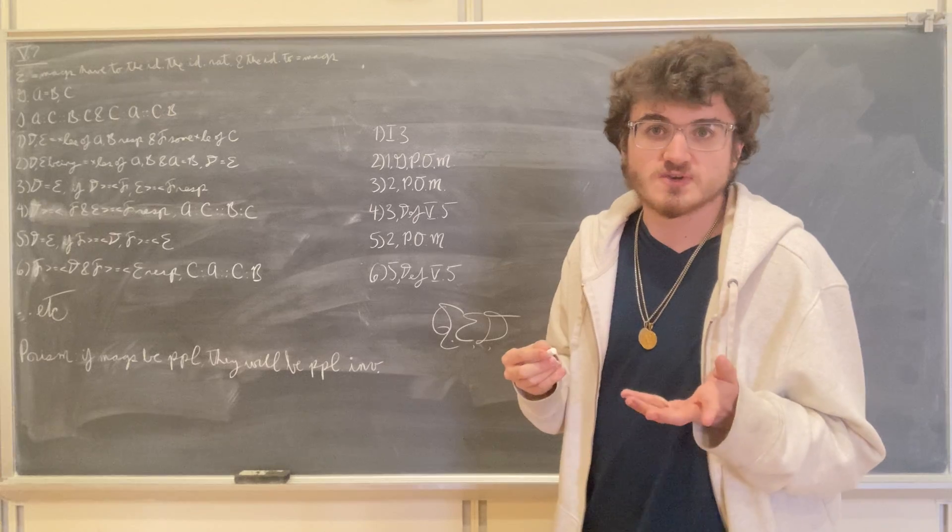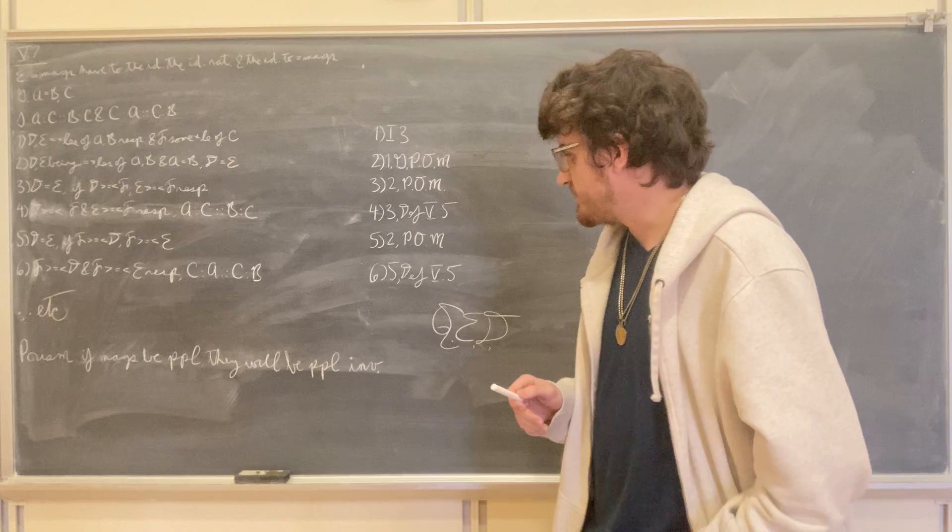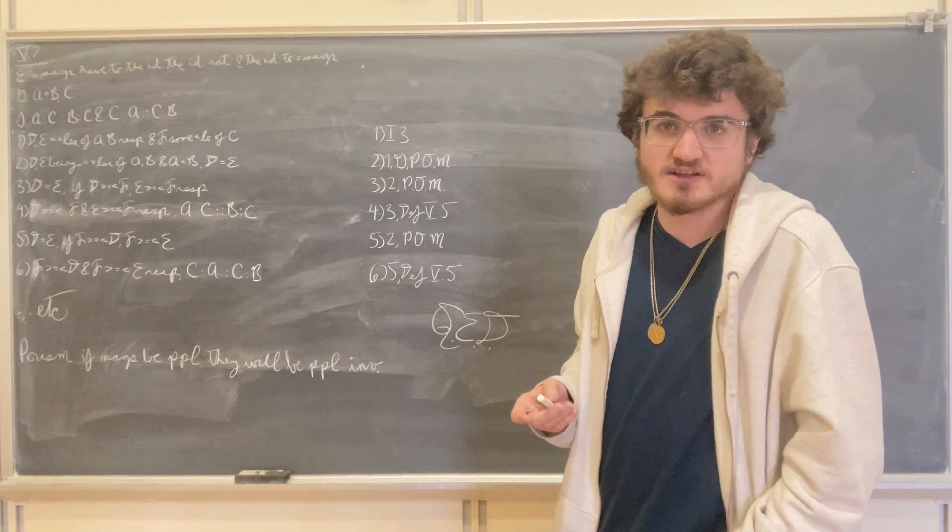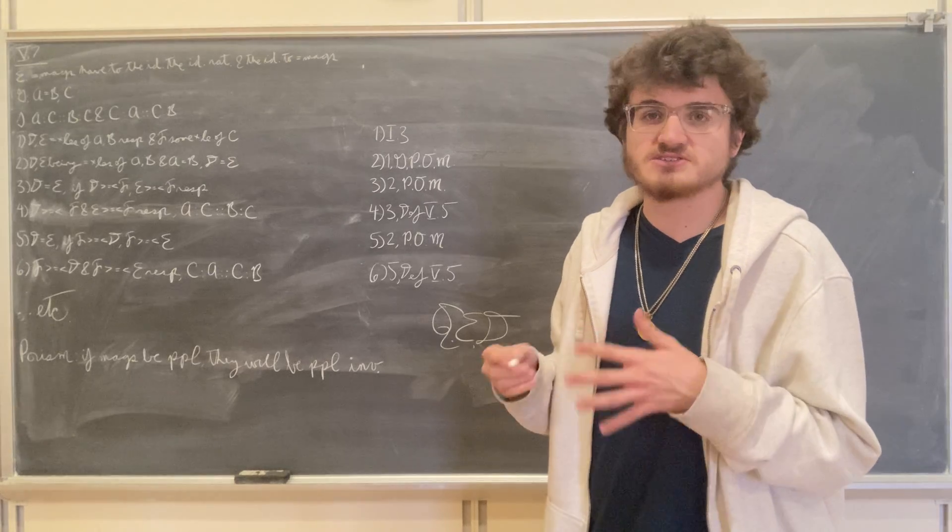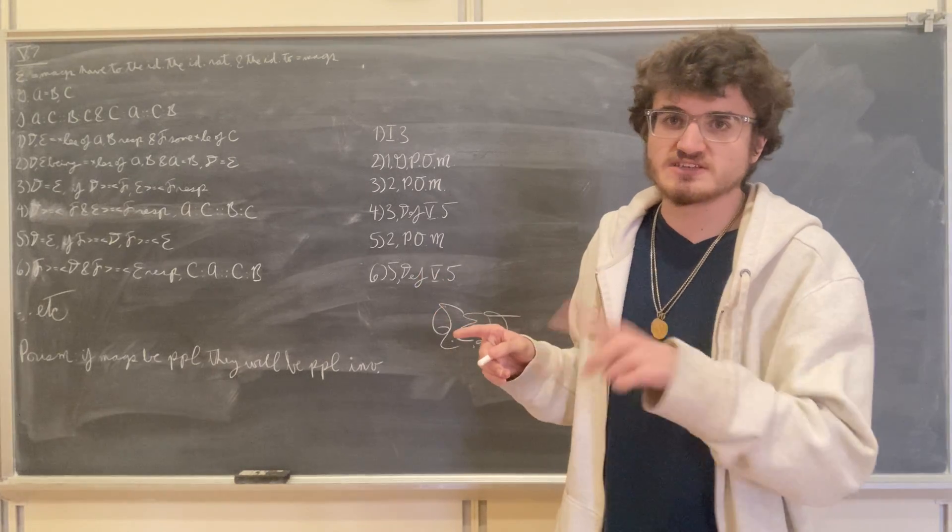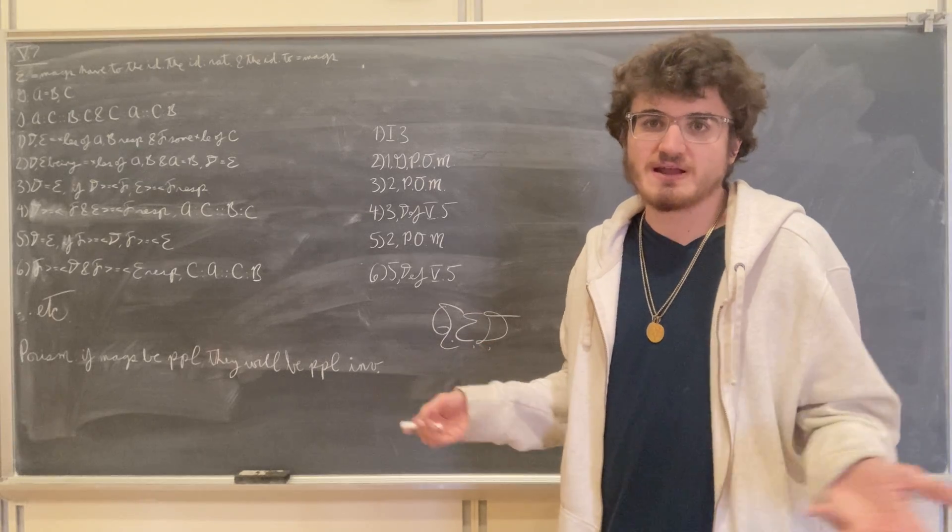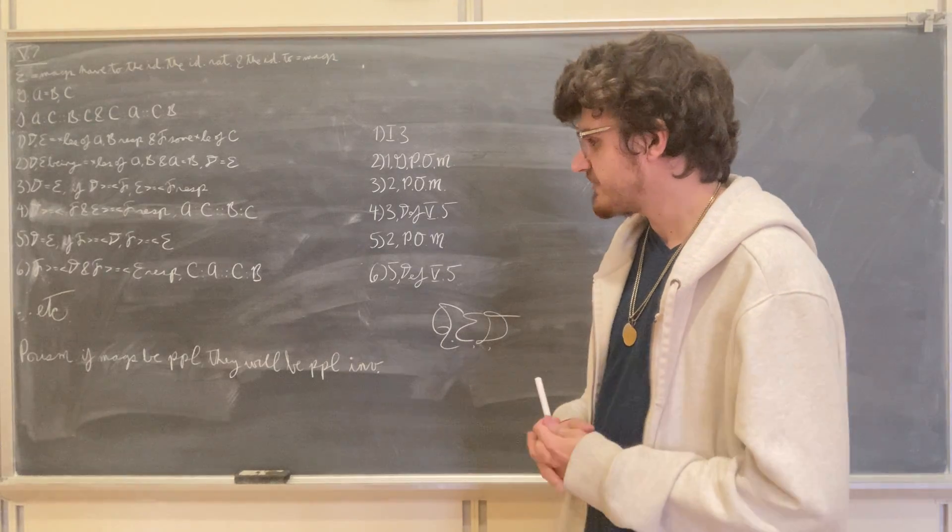Now, this proposition also has a porism appended to it. It states that if magnitudes be proportional, they will be proportional invertendo. They'll be proportional inversely. So it looks something like 2 is to 3 just as 4 is to 6, which means that 3 is to 2 just as 6 is to 4. And that's obviously true.